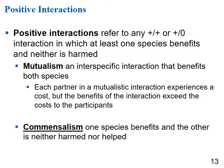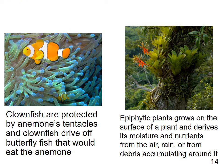Positive interactions include mutualism and commensalism. Mutualism is an interspecific interaction that benefits both species — each partner experiences a cost but benefits exceed costs. Commensalism is when one species benefits and the other is neither harmed nor helped. An example of mutualism: the clownfish is protected by the anemone's tentacles, and in return, the clownfish drives off butterfly fish that would eat the anemone — many know this from Finding Nemo.